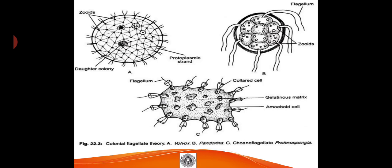In pandorina, there is a multi-nucleate condition where the multi-nucleate cytoplasm gradually develops cell boundaries or plasma membranes over time, and each develops a flagellum, behaving like a multicellular animal. In the case of choanoflagellate-like proterospongia, multicellular nature gradually develops from the amoeboid cells present in a gelatinous matrix, with collared cells bearing flagella on the outer periphery.